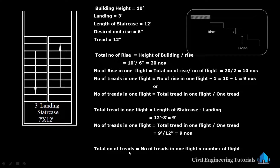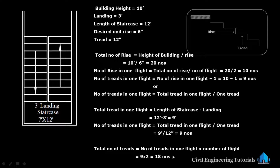Total number of treads equals number of treads in one flight multiplied by number of flights. Number of treads in one flight is 9 numbers, and number of flights is 2, so 9 into 2 equals 18 numbers total. One flight has 9 treads, another flight has 9 treads — both sides 9, total 18 numbers. Total number of rises is 20 numbers.